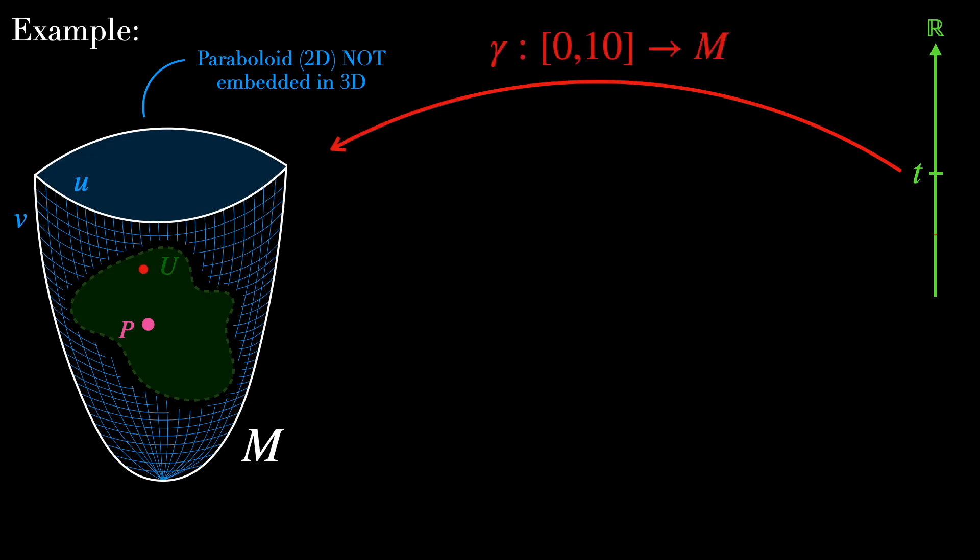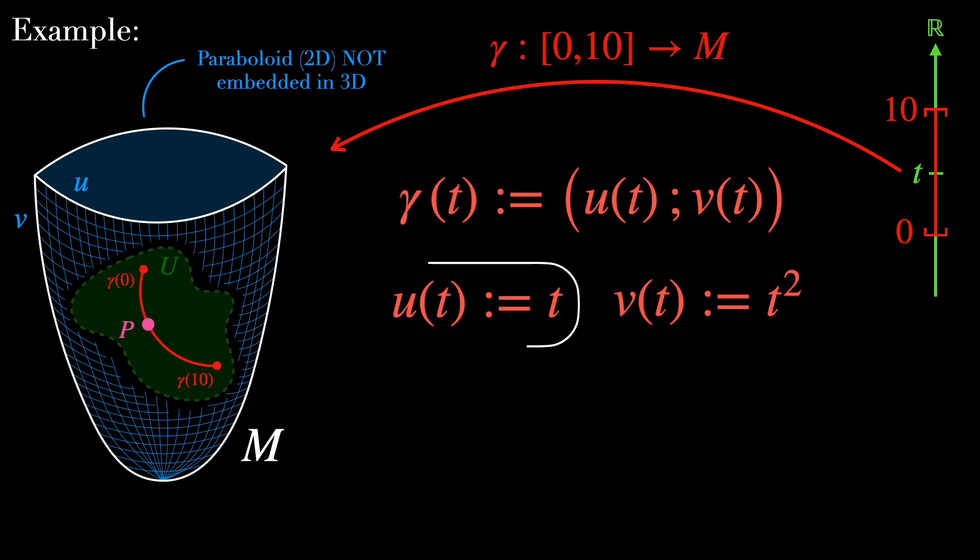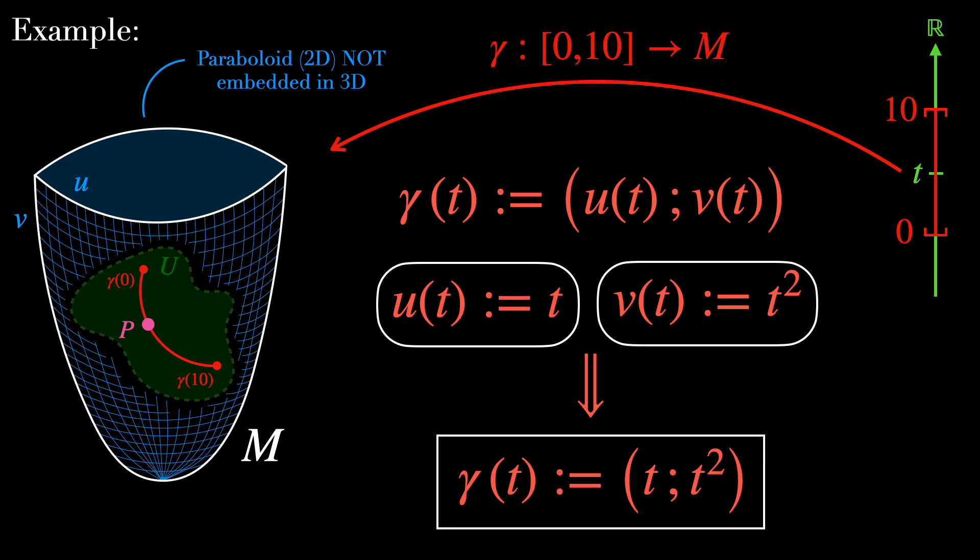Define gamma from 0, 10 in the real line to the manifold M as a parameterized curve on M. The domain 0, 10 in R serves as the interval of the parameter T. And the image of gamma is the curve on M. Let the curve gamma of T, which is U of T and V of T, represent the path in terms of intrinsic coordinates U, V on M, where U of T is going to be defined as T and V of T, T squared. Here U of T, V of T represent the coordinates of the curve gamma in the intrinsic coordinate system U, V on M.